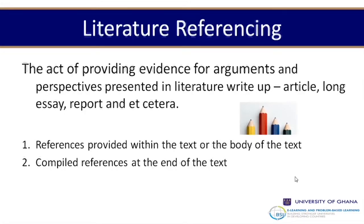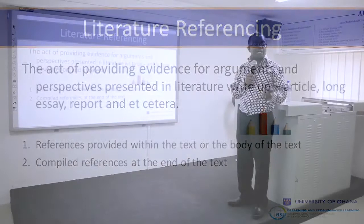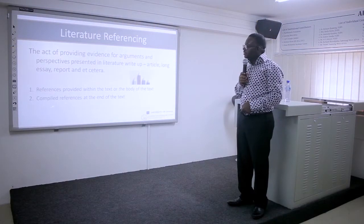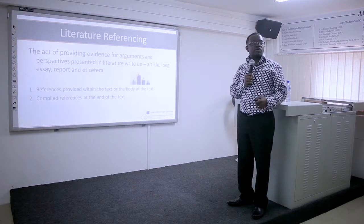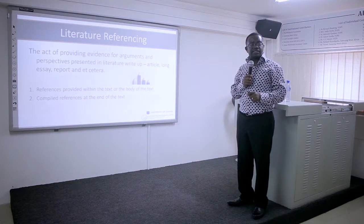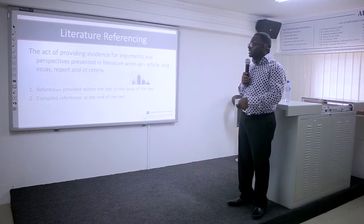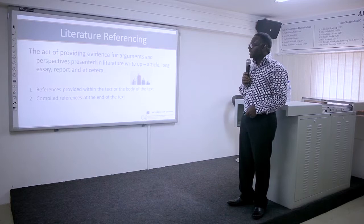These things can be done in two ways: either provide the references within the text, which is required for every argument that you put across, and then at the end you compile the reference list. This is different from bibliography. Bibliography is a compilation of references that you read, including those you did not cite, whereas the reference list is more focused on the sources that were actually cited in the work.